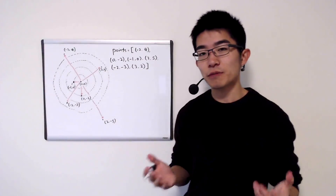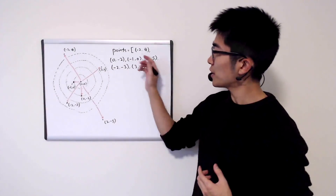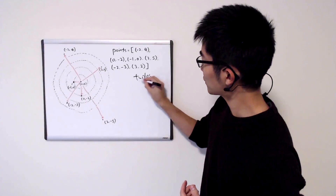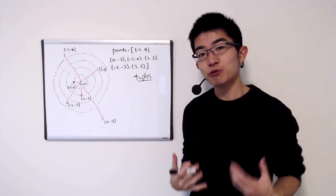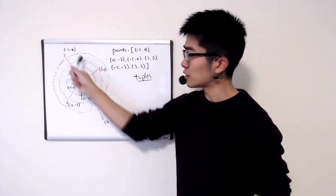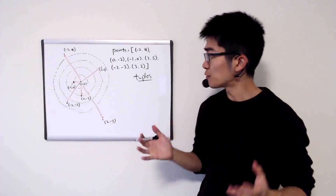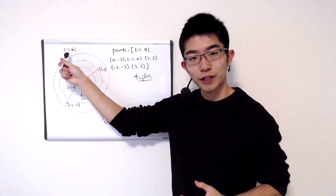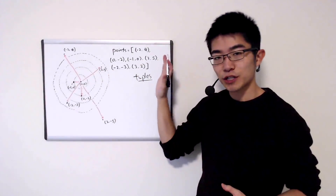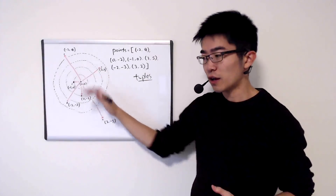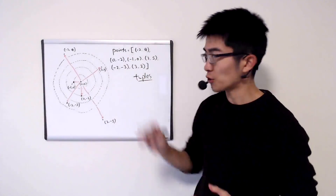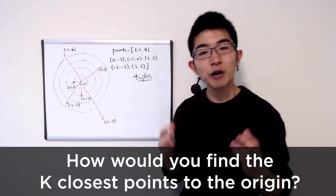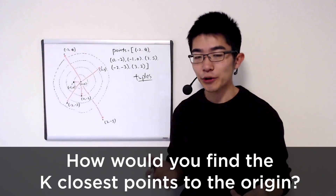Here's a coding interview problem from Amazon. We have an array of tuples, or an array of arrays of two items each. This represents points on a two-dimensional space. So for example, the first item, minus two, four, represents this point right here, because the x-coordinate is minus two and the y-coordinate is four. The problem is: given these points, how would you find the k closest points to the origin?